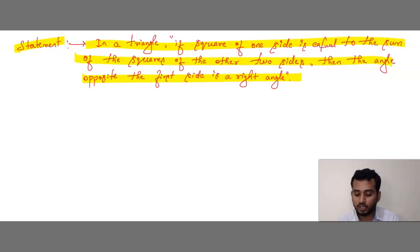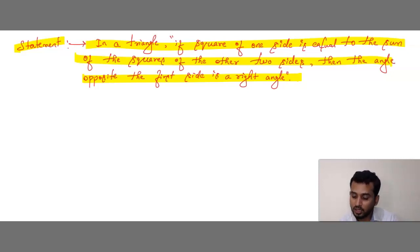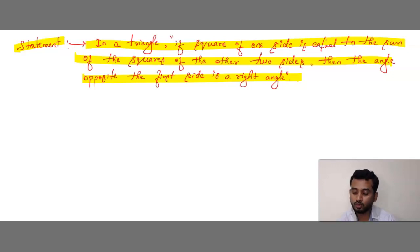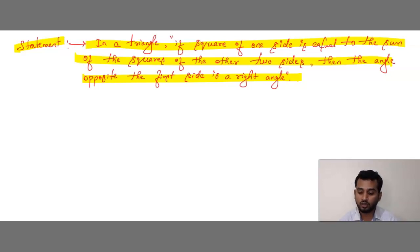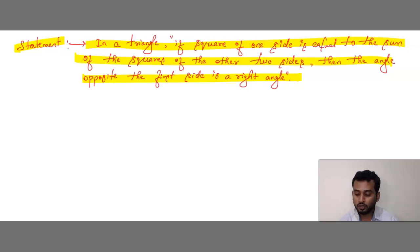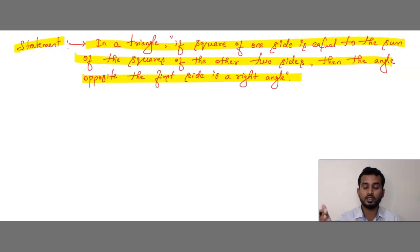Now what is the question here? In a triangle, if the square of one side is equal to the sum of the squares of the other two sides, then we have to prove that the angle opposite to the first side is a right angle.